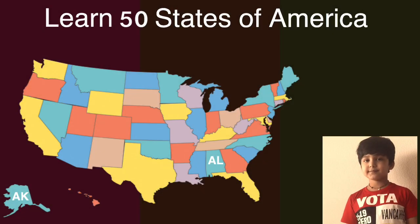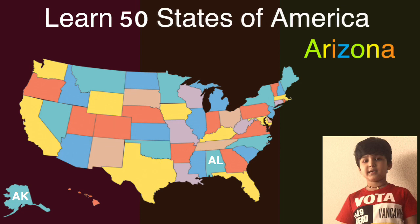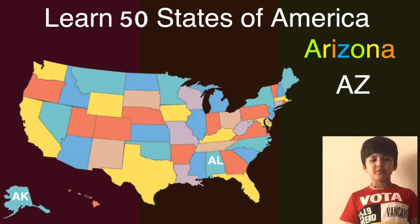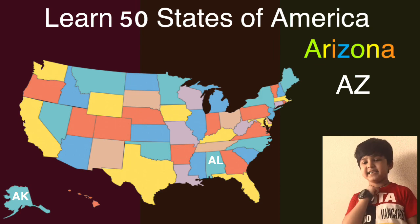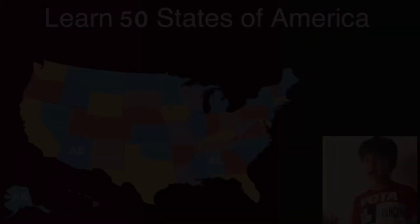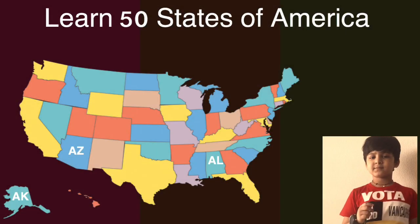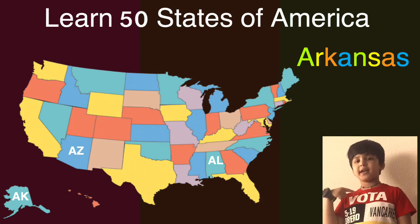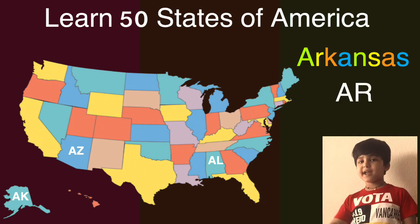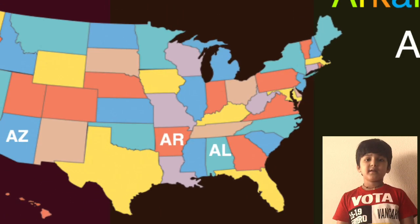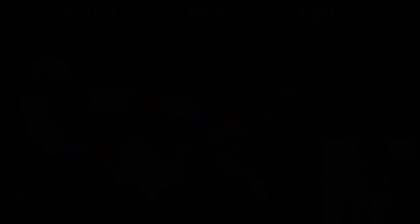Can you guess who will come next? The next one is Arizona and the short one is AZ. Here comes Arizona on the map. Can you guess who will come next? The next one is Arkansas and the short one is AR. Here comes Arkansas on the map.